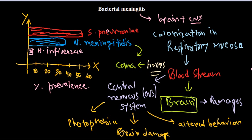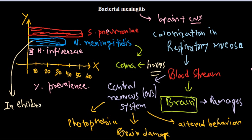Neisseria meningitidis infection is very common between 2 to 18 years of age, making it predominantly a disease affecting children and adolescents.